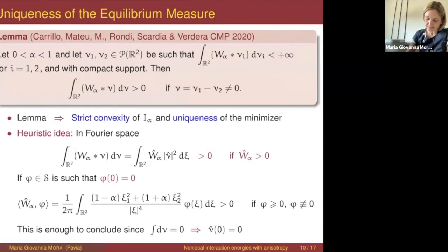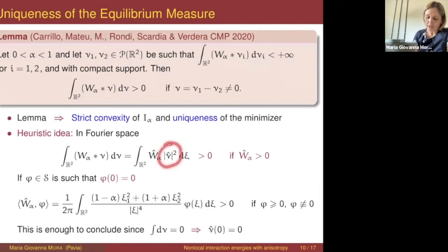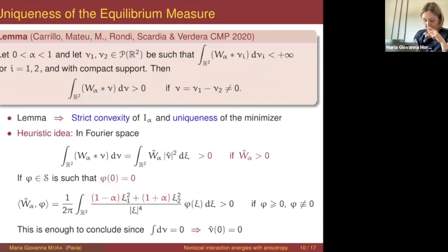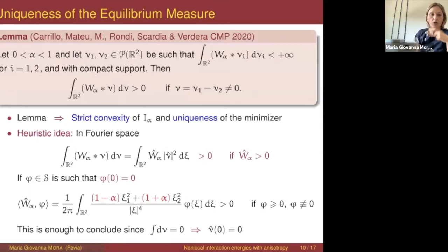Positivity on the class of test functions satisfying this additional condition is enough, because here ν is the difference of two probability measures, so the integral of ν on the whole plane is zero. This implies that the Fourier transform of ν is zero at zero, so we have as test function something which is zero at zero. Let me mention that alpha equal to 1 and symmetrically alpha equal to −1 are values of the parameter where we have some degeneracy of the Fourier transform — we lose coercivity of this quadratic form — so I'll go back to this remark at the end of the talk.